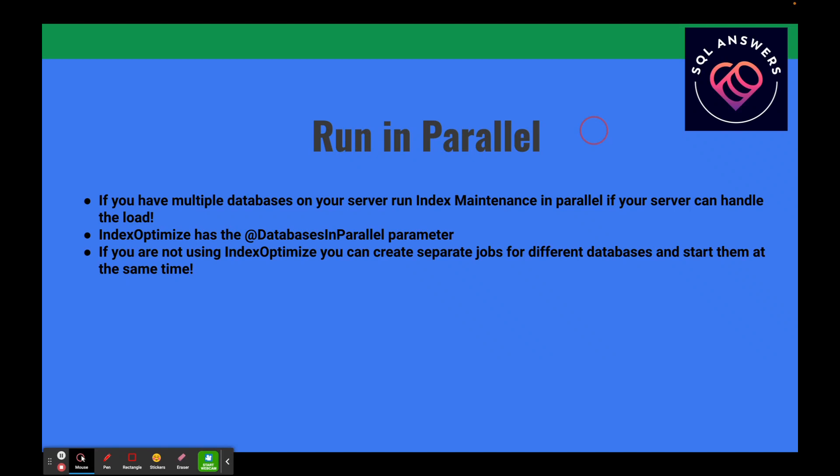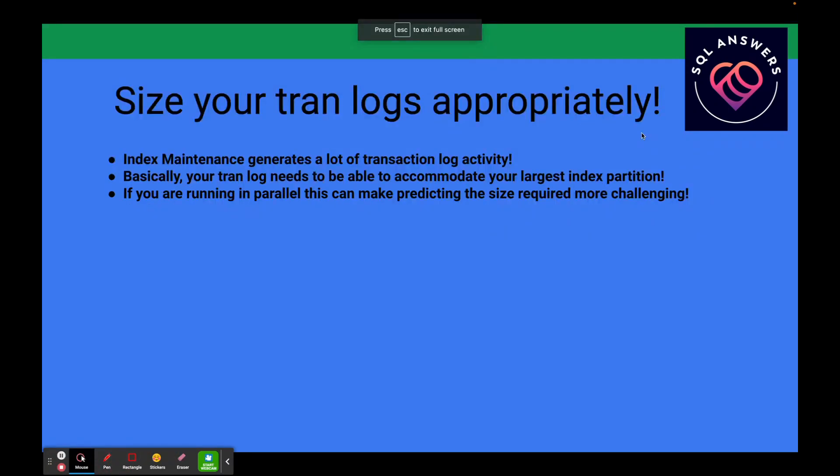If you're not using IndexOptimize, another approach is to create separate jobs on your server that run on different sets of databases and start them at the same time. You could divide your databases into two groups if running two processes in parallel. Of course, you'll want to consider the relative sizes of those databases when creating these groups.